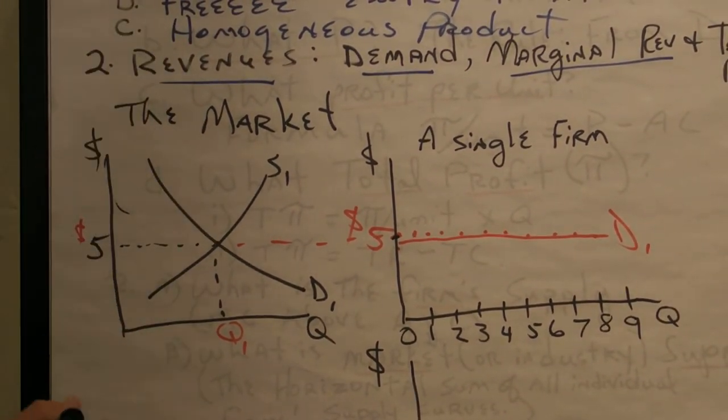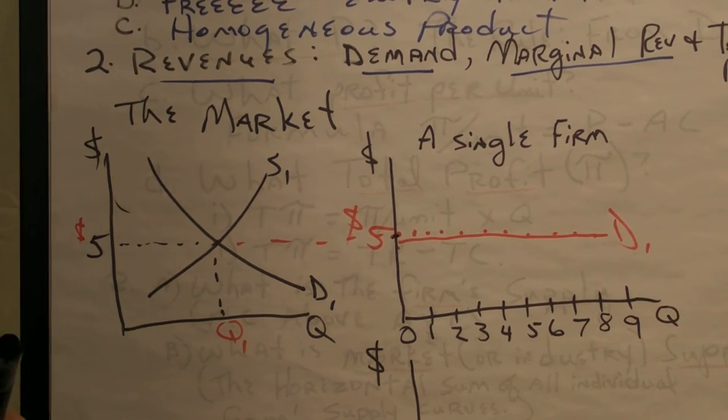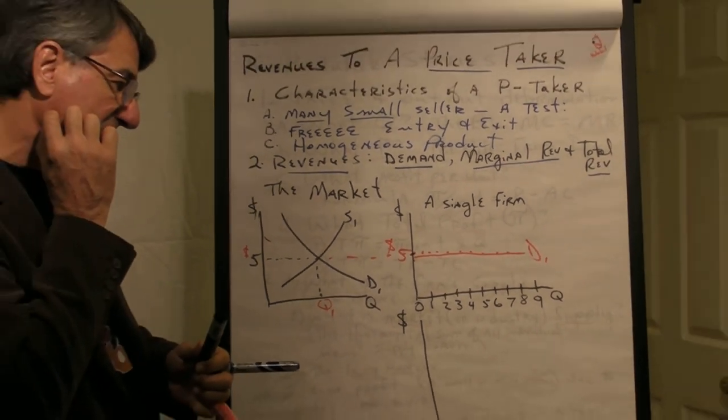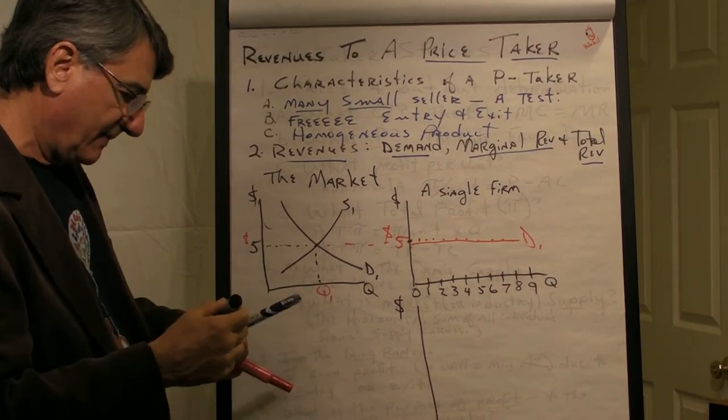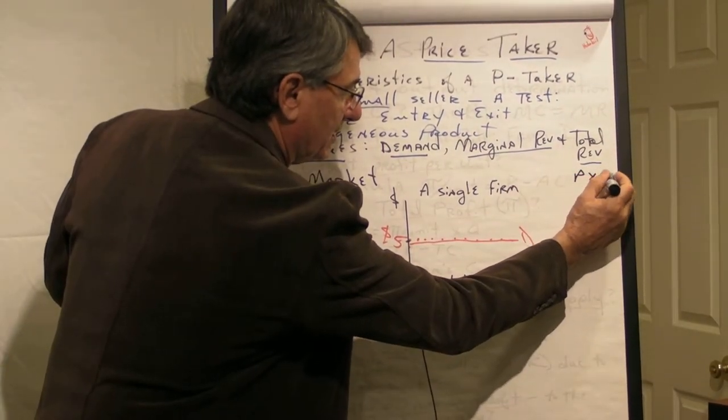Now, to figure out what is total revenue, well, total revenue, you'll recall, is price times quantity.